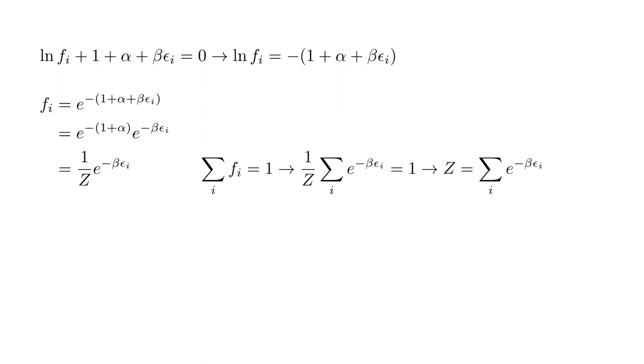The sum over i of f_i has to equal one, so one over Z times the sum over i of e to the minus beta epsilon_i equals one. And Z equals sum over i of e to the minus beta epsilon_i. This result, in which the occupation frequency of a phase space cell, which is the probability for an atom to be in that cell, decreases exponentially with the cell energy, is called a Boltzmann distribution. It's one of the most fundamental and important results in all of statistical mechanics. The normalizing factor Z is called the partition function.